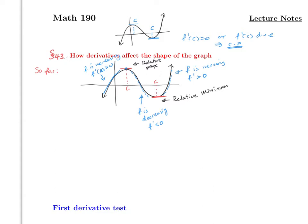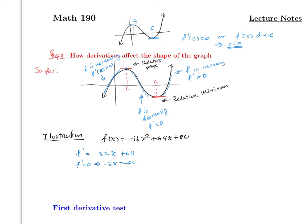Let's do a quick example. Say f(x) = -16x² + 64x + 80, and we want to find where this is increasing, decreasing, and the critical points. Starting with critical points: f'(x) = -32x + 64. Setting f'(x) = 0 gives -32x = -64, so x = 2.